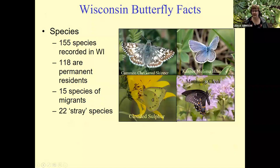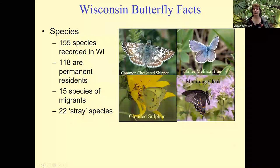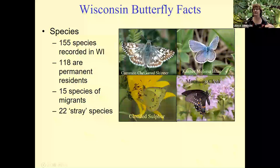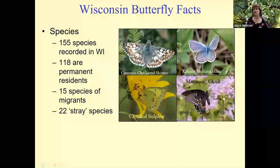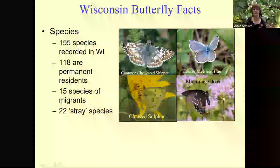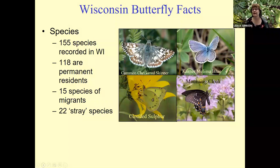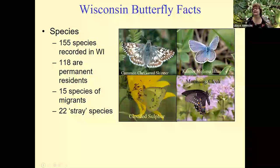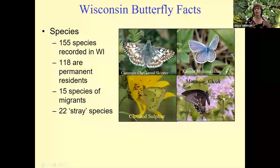In Wisconsin, we have about 155 species. That number continues to grow as climate change continues — we are getting more butterflies coming into the state from southern areas where it's starting to get too hot for them, and as we continue to have storms, we get stray and migrant species blown up here. Of those 155, about 118 are what we call permanent residents that will lay eggs here, raise caterpillars here, and overwinter here. Migrants are ones that don't necessarily overwinter here, so that would be something like the monarch, for example — while they do lay eggs and have caterpillars here, they don't overwinter here.